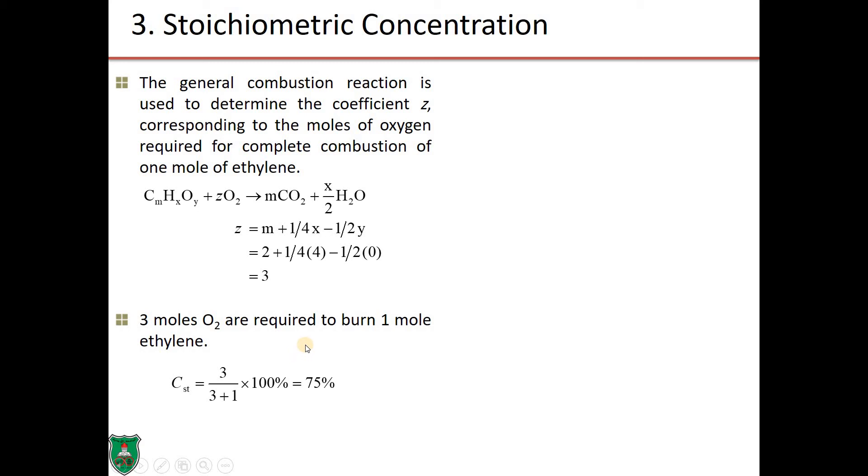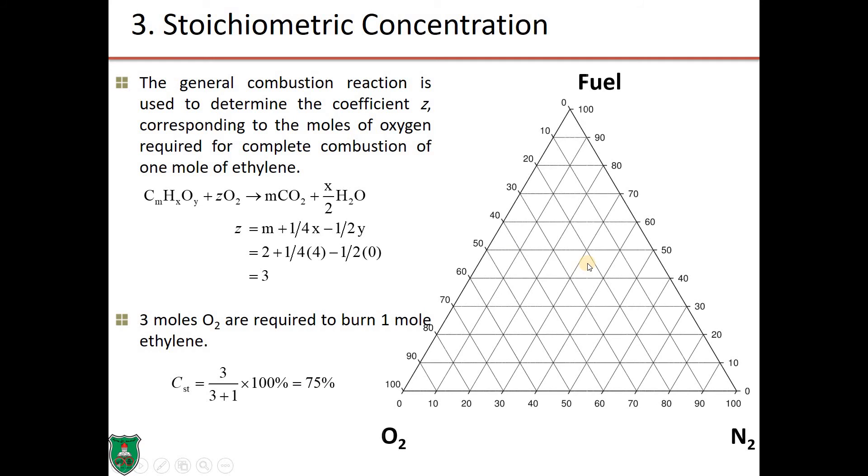We have ethylene. And, ethylene, if you remember, has the formula C2H4. That is, M is 2, X is 4, and Y is 0. So, if we substitute numbers, we obtain that Z to balance this equation is 3. What does this 3 mean? It means that 3 moles of oxygen are required to burn one mole of ethylene. Or, if we have pure oxygen right now and this fuel, ethylene, the stoichiometric concentration of oxygen corresponds to 3 over 3 plus 1. That is, 3 moles of oxygen over 3 moles of oxygen plus 1 mole ethylene times 100%. It's 75%.